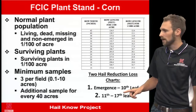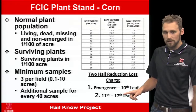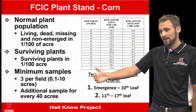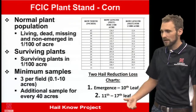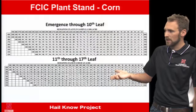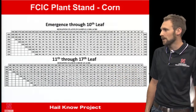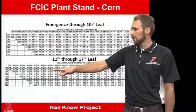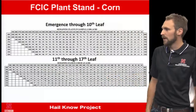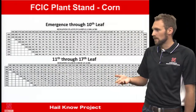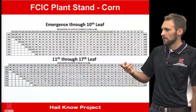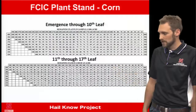Two different FCIC tables apply here: emergence through the 10th leaf, and 11th through 17th leaf — both using the horizontal leaf method. Even later in the season, adjusters evaluate for potential stand loss. The remaining plant stand percentage — based on 400 plants total — tells you the yield remaining in that field. It's a simple table: evaluate on one one-hundredths of an acre and compare your counts.